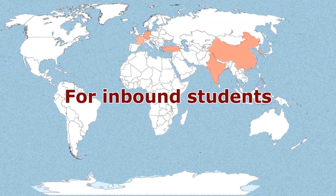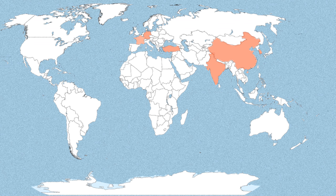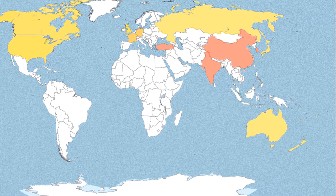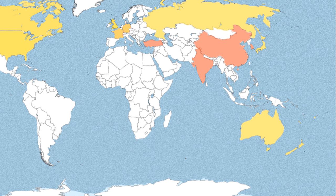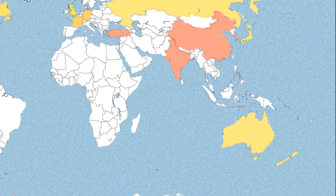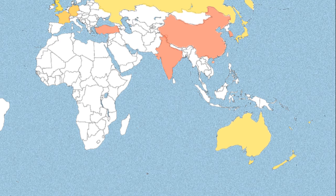For inbound students, the major countries are the United States, the United Kingdom, Australia, France, Germany, Russia, Japan, and Canada. In East and Southeast Asia, the countries that are emerging as leading destinations for international students are Malaysia and Singapore.